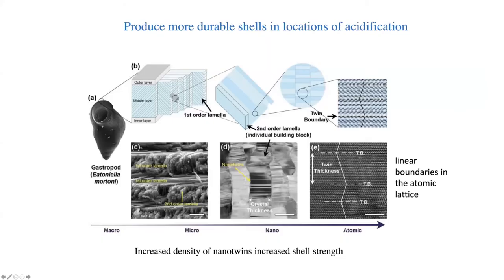Just straight off, the thing we looked at at the lowest scale, the atomic scale, was what kind of changes would occur in these snails at medium and high acidification. And what we found was that these nanotwins, these are linear boundaries between atomic lattices, they actually became thinner and thinner, which actually provides strength. So the density of these nanotwins, if you want to call them that, actually increased snail's shell strength. So they produced more durable shells. And as acidification increased, so did the durability to an extent.